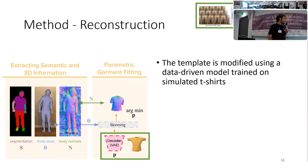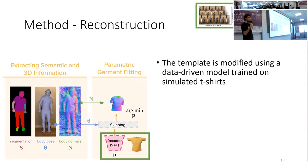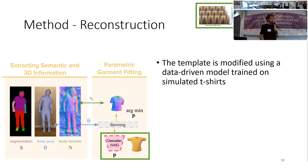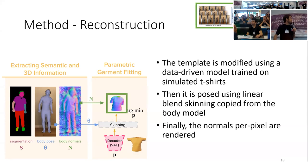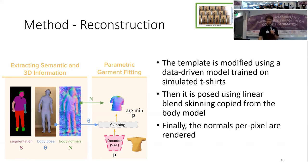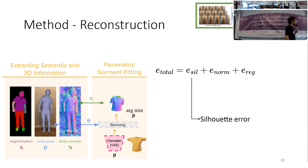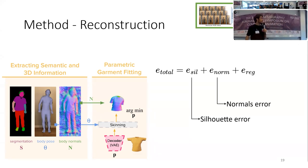Here is how it works. We have a data-driven model trained with simulated data, which keeps the template close to a simulated t-shirt shape. Then we apply skinning copied from the underlying body model, and render the normals of the mesh so we can directly compare against the target. To evaluate the reconstruction quality we use an error function: the first term is the silhouette error, which measures how close the outline of the reconstructed mesh is to the target. The normals error measures how different the surfaces are.